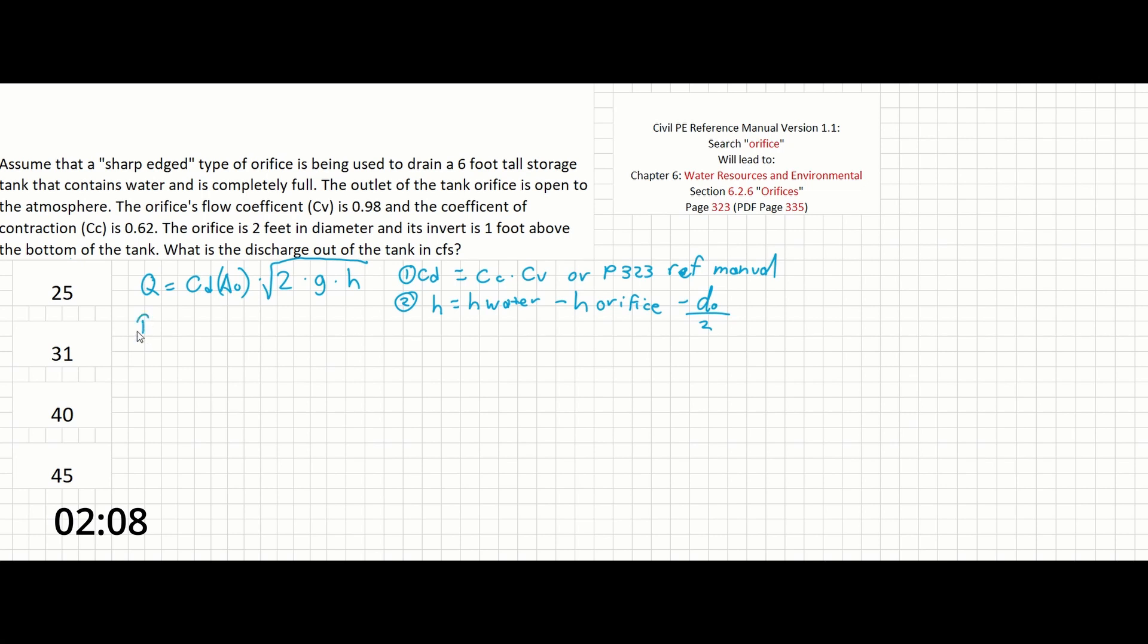So first, we need to pick the correct CD. So going to page 323 of the reference manual, we can see that a sharp-edged type orifice has a CD of 0.61.